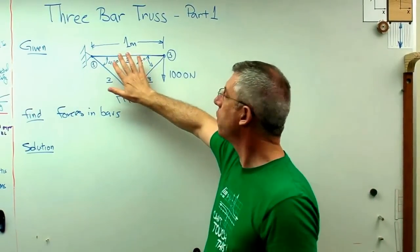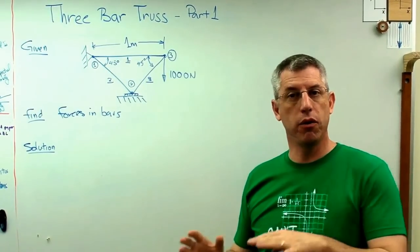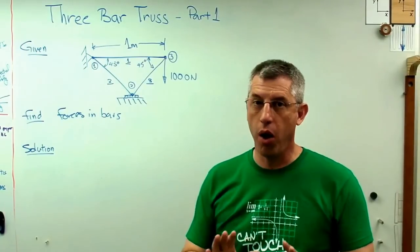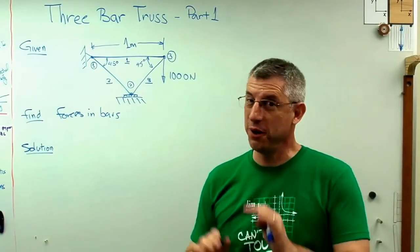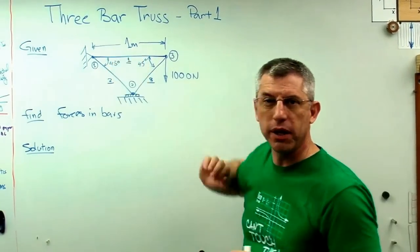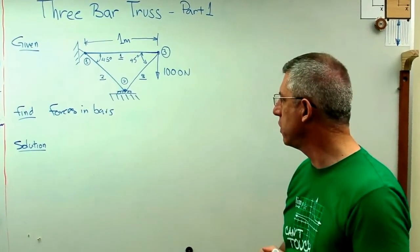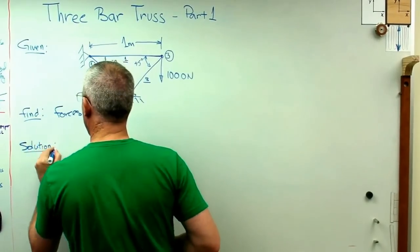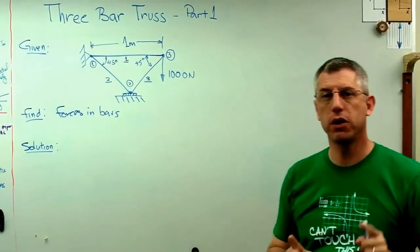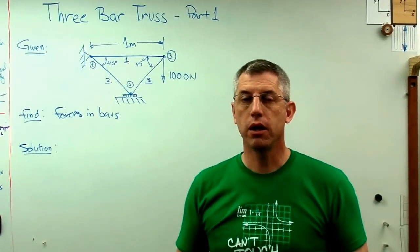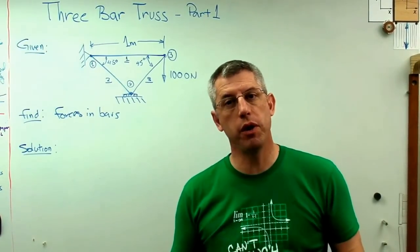So circles are numbers that correspond to joints, and underlines are numbers that correspond to bars. Now this is just the way I'm doing it. Your teacher may have a different format or a different sort of system they want to use. By all means, do what your teacher wants you to do. That teacher's grading you, I'm not. But this is just sort of bookkeeping. This part can change without affecting the solution any.